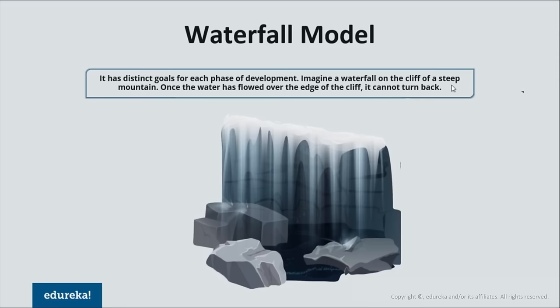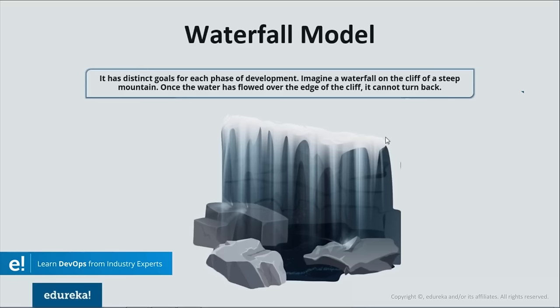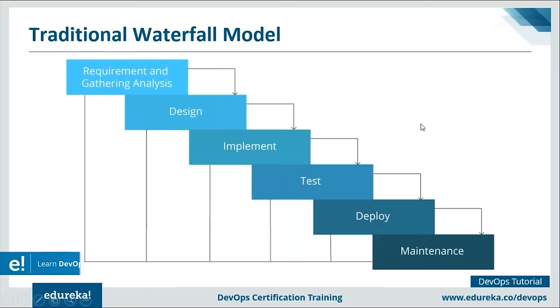Let's start with the waterfall model. Before DevOps, organizations used this software development methodology. First documented in 1970 by Royce, it was the first public documented lifecycle model. The waterfall model describes a development method that is linear and sequential, with distinct goals for each phase. Just like a waterfall where water can't turn back once it flows over the edge, an application moves to the next stage only when the previous one is complete.